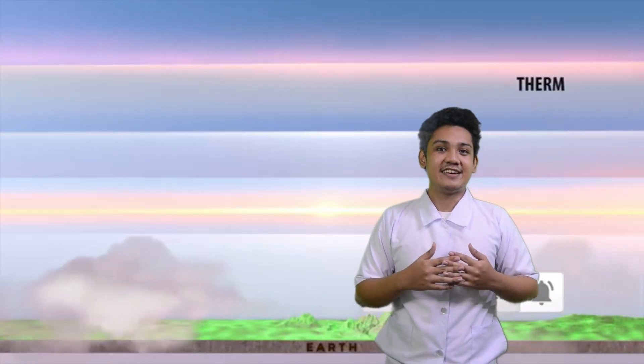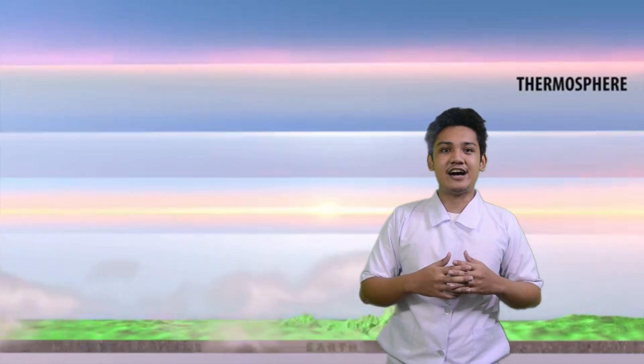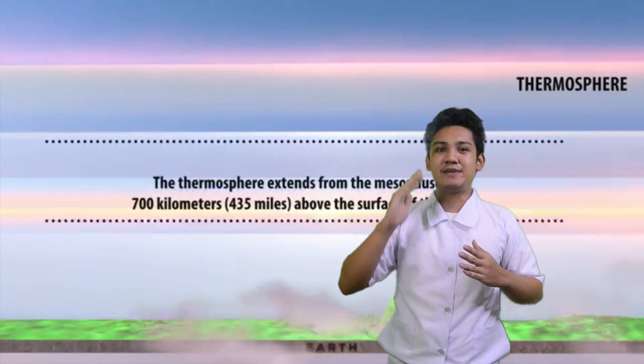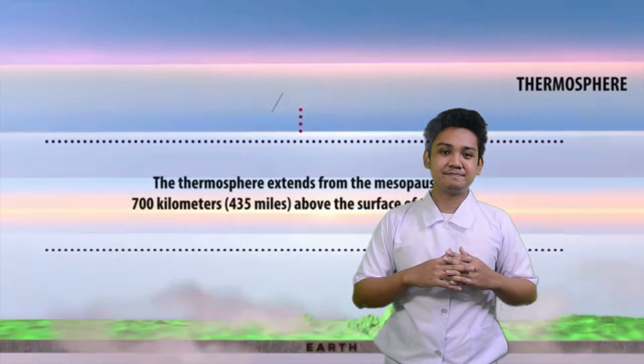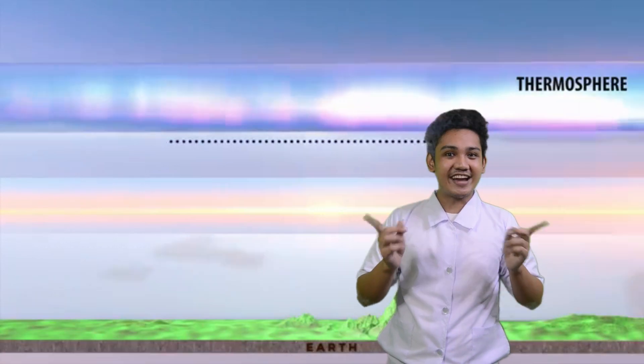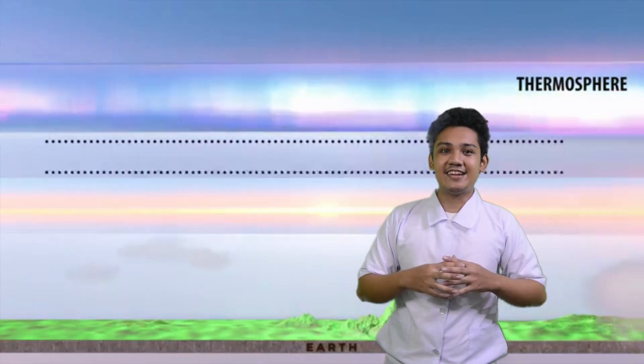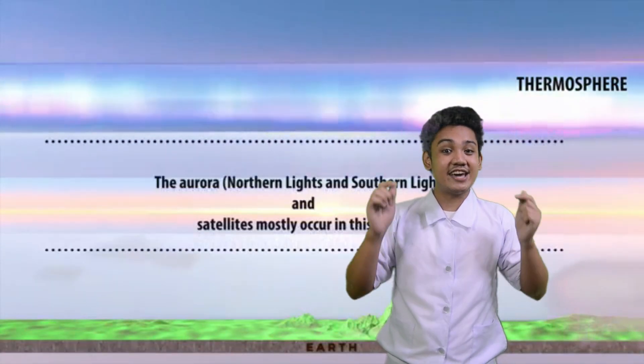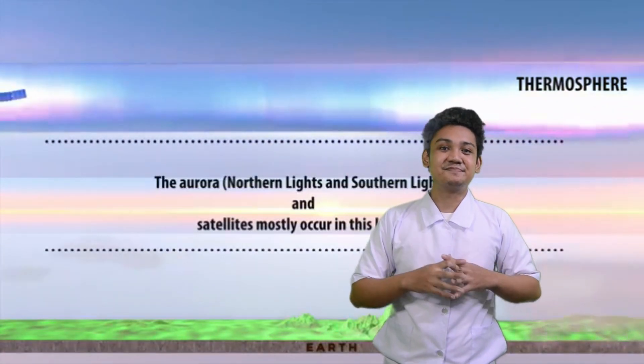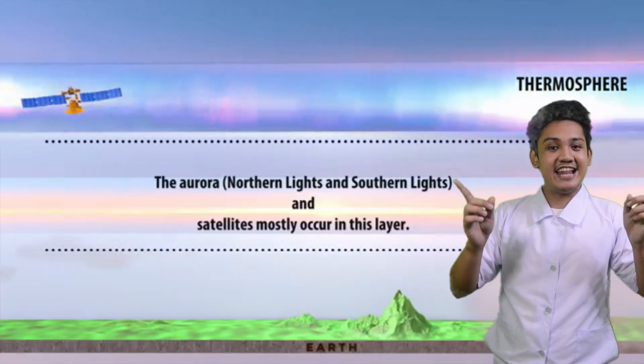And we have the thermosphere. It extends up to 600 km above the mesosphere. Aurora and satellites are located here.